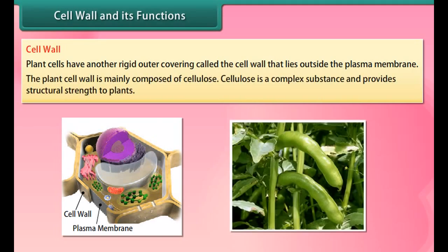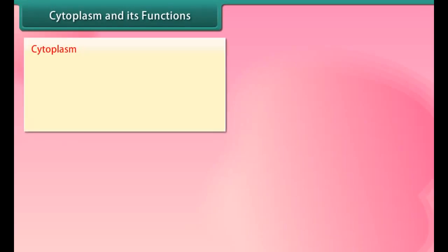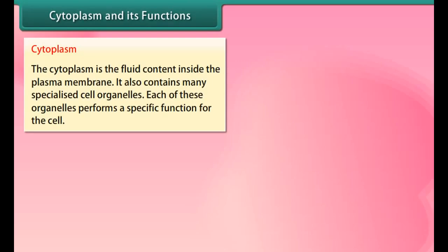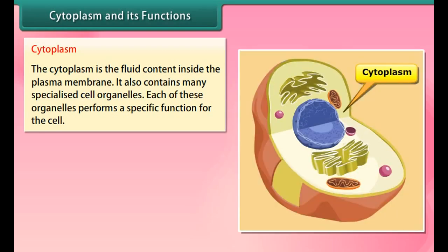Unicellular freshwater organisms and most plant cells tend to gain water through osmosis. Absorption of water by plant roots is also an example of osmosis. Diffusion is important in the exchange of gases and water in the life of a cell.